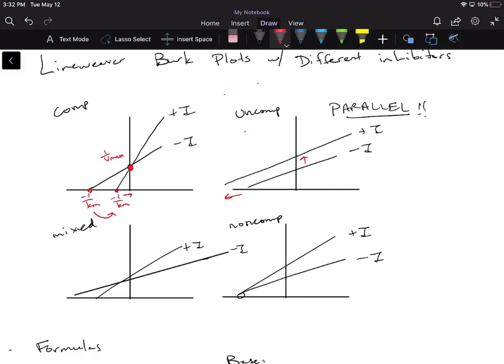So we're going to be giving you guys data and you're going to be plotting that data on these Lineweaver-Burk plots, and based on the type of lines you draw, you should be able to tell if it's a competitive, uncompetitive, mixed, or non-competitive inhibitor.